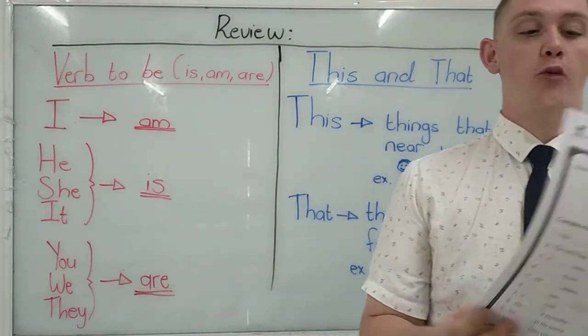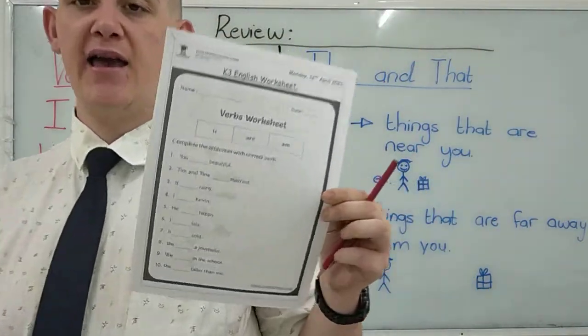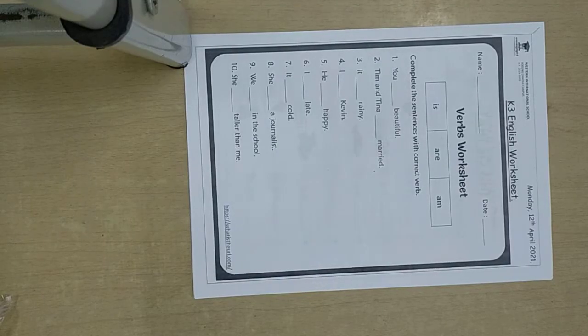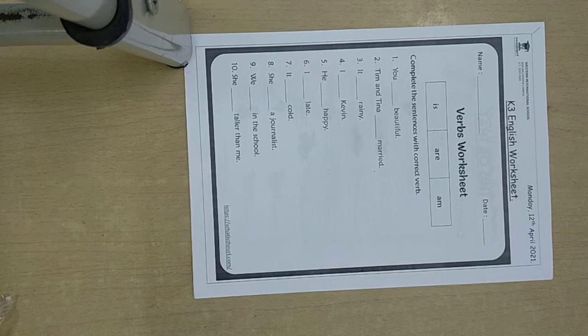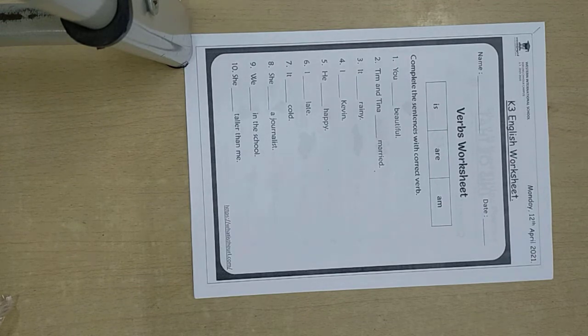Our afternoon activities are going to be a couple of worksheets. Let's take a closer look. Here are our worksheets for the afternoon. We are going to start with verb to be — easy peasy. We just have to remember the rules.